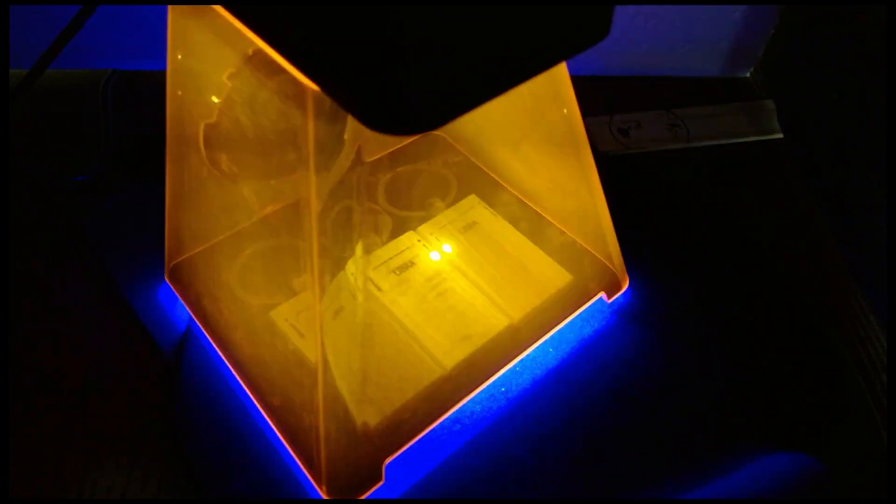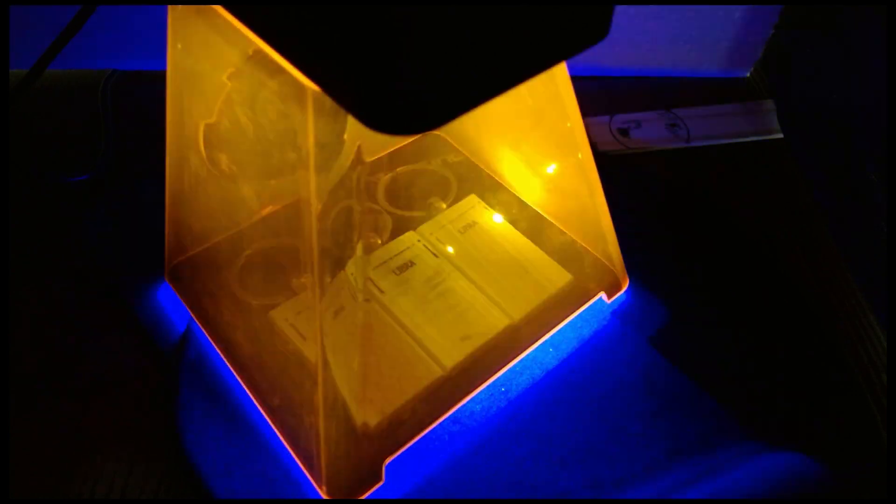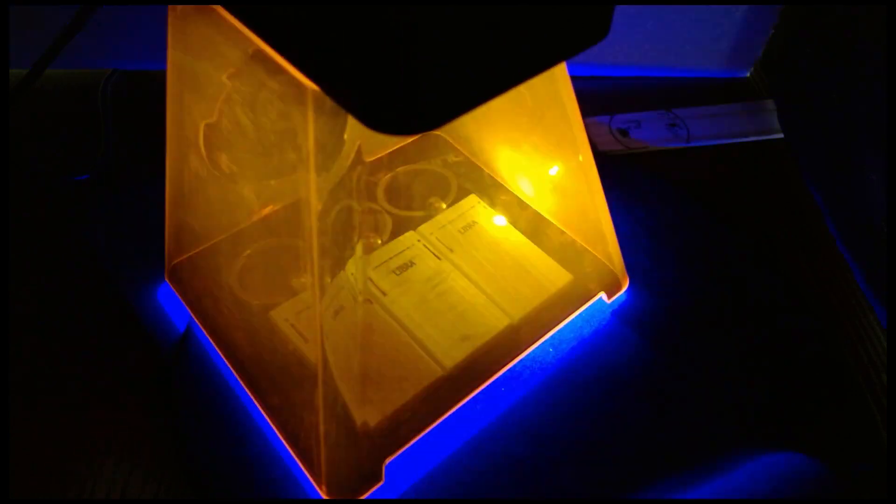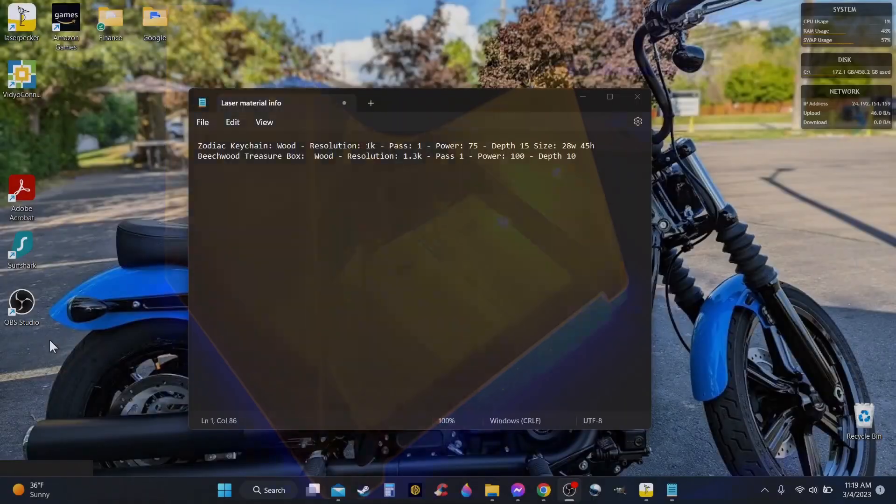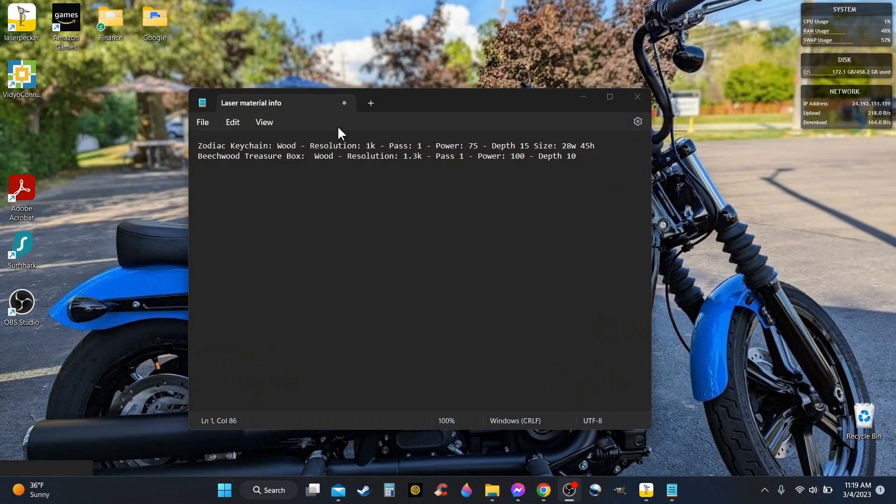So if you want to take a look at the settings I've got going on for these keychains, let me bring it up on the computer. Zodiac keychain. Resolution 1K, pass of 1, power of 75, depth of 15, and these are the sides that I have fitting on there.